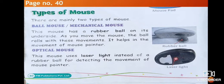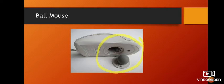There are mainly two types of mouse: ball mouse, also called mechanical mouse, and optical mouse. The ball mouse has a rubber ball on its underside. As you move the mouse, the ball rolls with these movements, which helps in the movement of the mouse pointer.